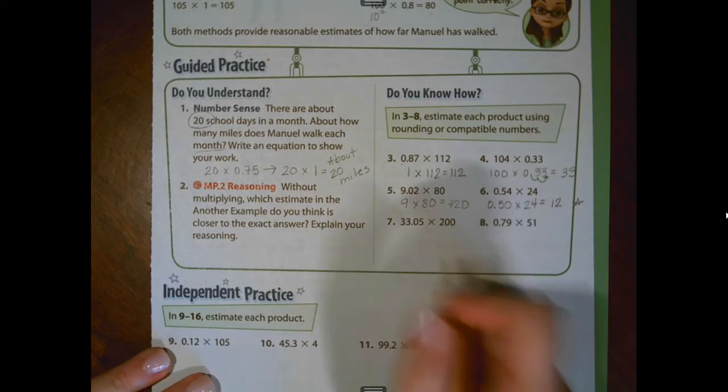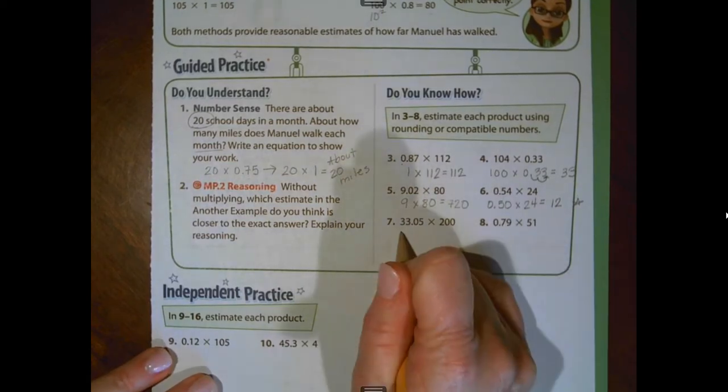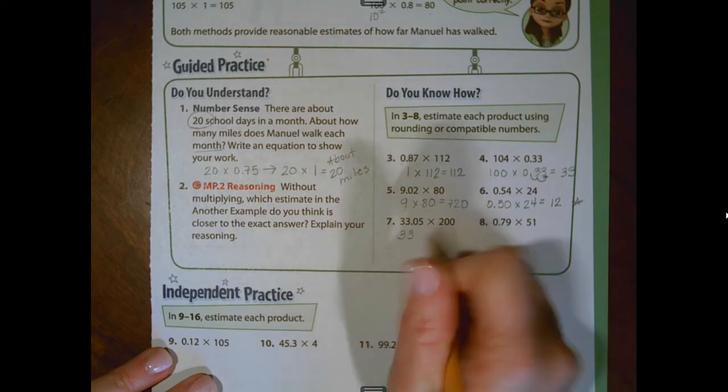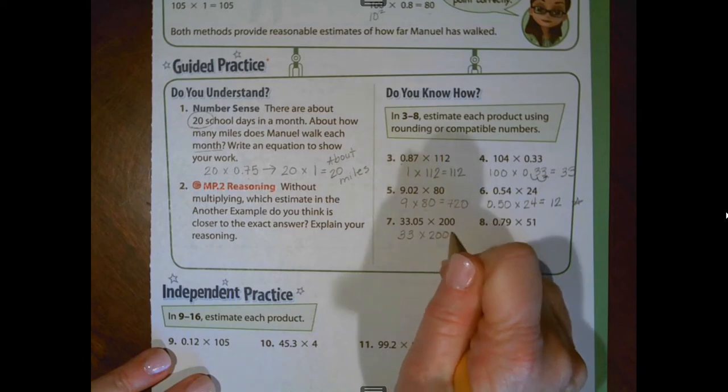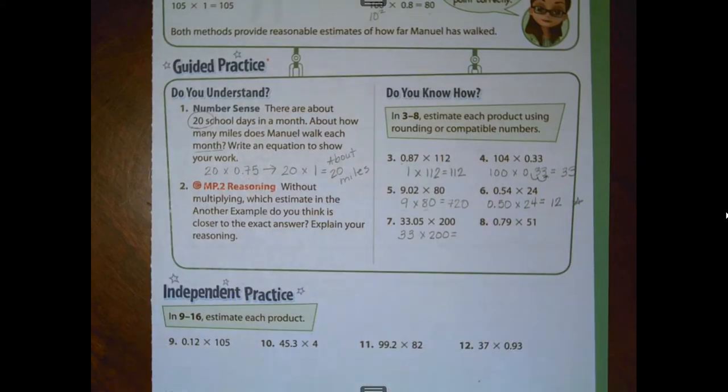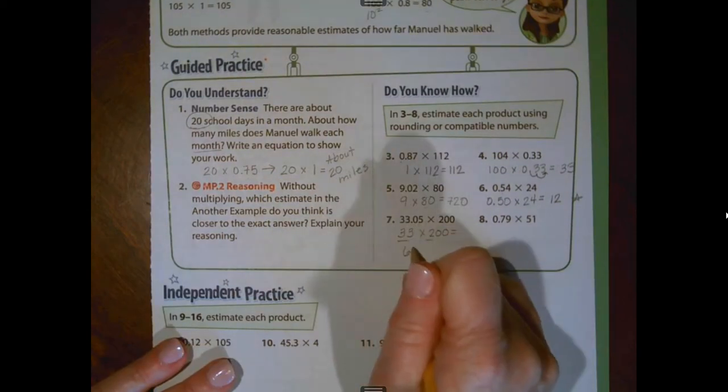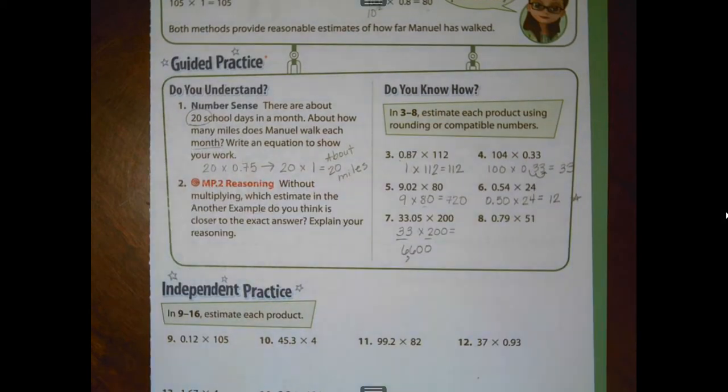This one right here, number seven, I'm going to round this to the nearest whole number, which would be 33. And I'm going to actually be able to do some mental math and still multiply it times 200. Thirty-three two times, all you've got to do is double it, so we get 66. We annex these two zeros, so we get an estimate of 6,600.